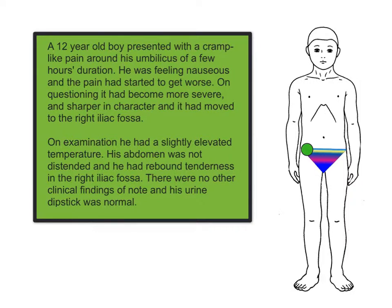On examination, he had a slightly elevated temperature, his abdomen was not distended, and he had rebound tenderness in the right iliac fossa. There were no other clinical findings of note, and his urine dipstick was normal. A provisional diagnosis of acute appendicitis was made.